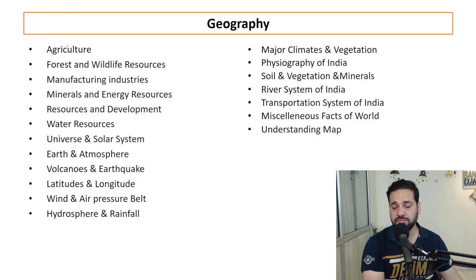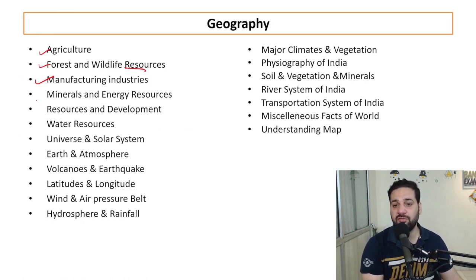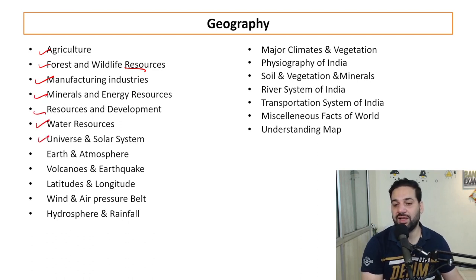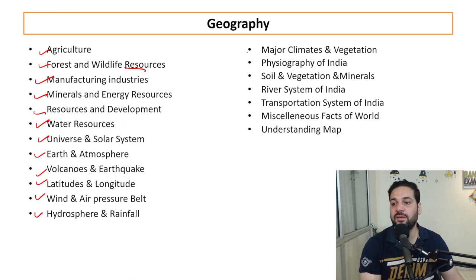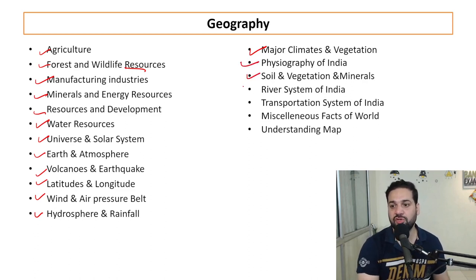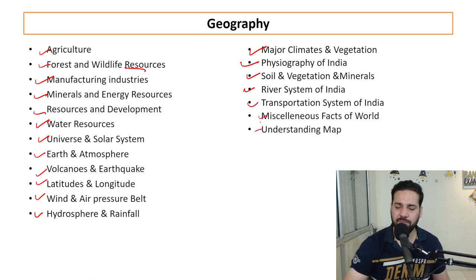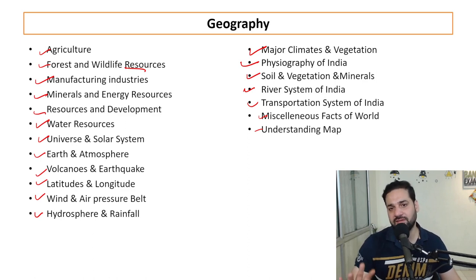For Geography, topics include: agriculture, forest and wildlife resources, manufacturing industry, mineral and energy resources, resources and development, water resources, universe and solar system, earth and atmosphere, volcanoes and earthquakes, latitude and longitude, wind and air pressure belts, hydrosphere and rainfall, major climates and vegetations, physiography of India, soil and vegetation, river system of India, and transportation system of India - the basic syllabus up to 10th class.